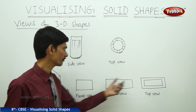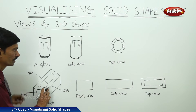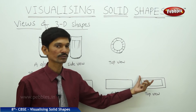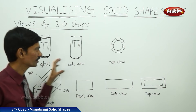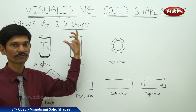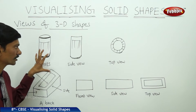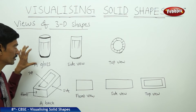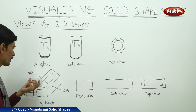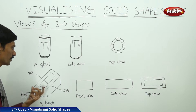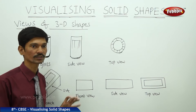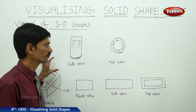The top view of the brick looks like a rectangular path, with one inner rectangle and one outer rectangle. We can observe that 3D objects can look differently from different positions. There are three possibilities: side view, top view, and front view. Every 3D object can be viewed from these different positions.